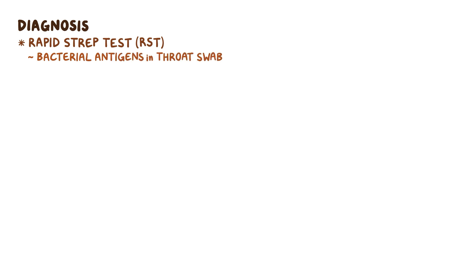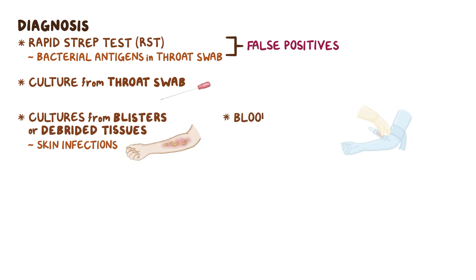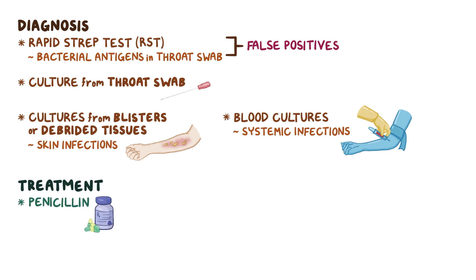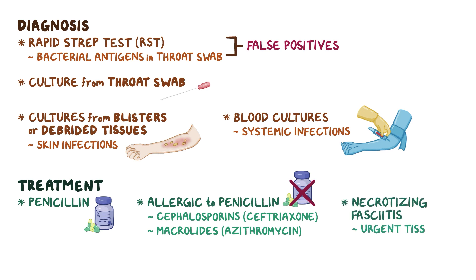Diagnosis of strep pharyngitis can be done with rapid strep tests (RST), which look for bacterial antigens in a throat swab. However, since this bacteria can peacefully colonize people's pharynges, RST gives a lot of false positives, so a definitive diagnosis requires a culture from a throat swab. For skin infections, cultures can be done from the fluid inside blisters or from debrided tissues, and blood cultures can be done when a systemic infection is suspected. Treatment is penicillin G, since strep pyogenes remains sensitive to it. For penicillin-allergic patients, cephalosporins like ceftriaxone or macrolides like azithromycin may be used. For necrotizing fasciitis, urgent tissue debridement is also necessary.